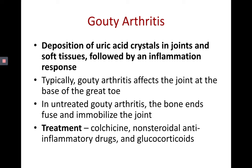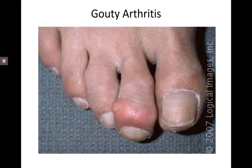Gouty arthritis occurs when uric acid crystals deposit in joints and soft tissues, commonly in the toes and fingers — particularly the big toe or thumb. If untreated, gouty arthritis causes bone ends to fuse. Treatment includes colchicine, non-steroidal anti-inflammatory drugs, and glucocorticoids — essentially anti-inflammatory drugs and steroids similar to other chronic arthritis treatments. An example image shows a uric acid crystal deposited in the second toe with visible inflammation and swelling.